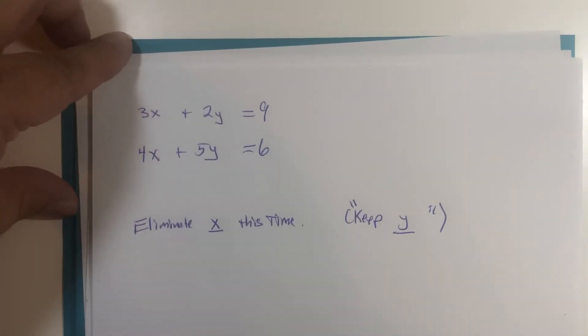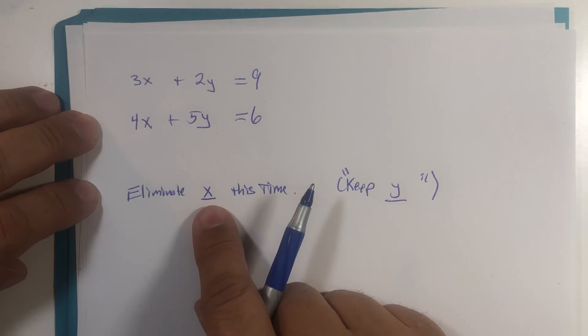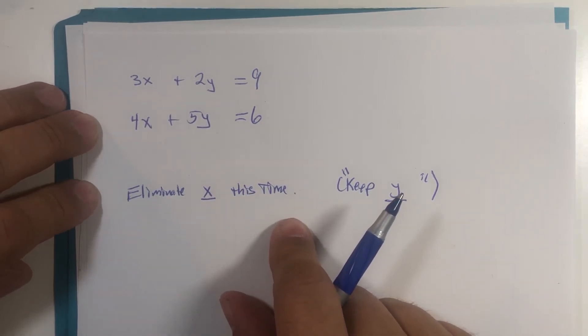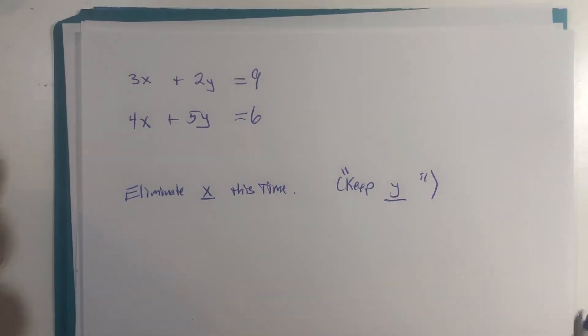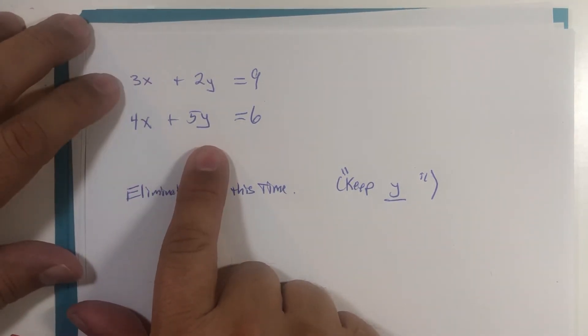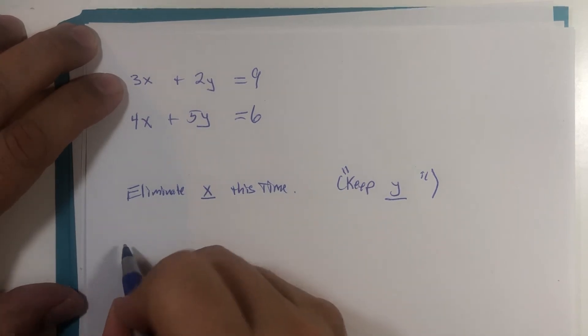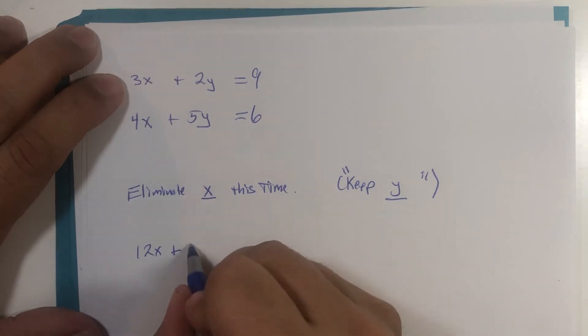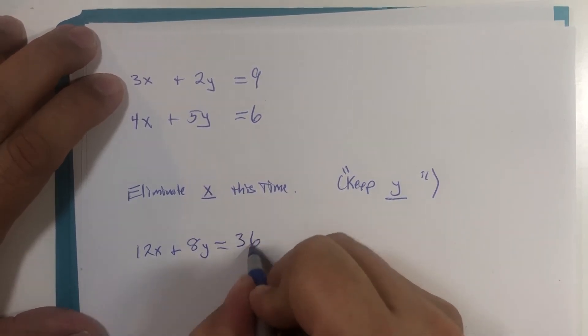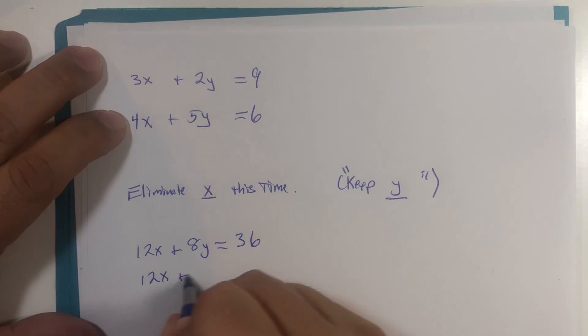Let's suppose we were going to eliminate the x and keep the y variable. So if we're going to get rid of x, we would multiply this top one by four and multiply this one by three. So if we multiply the top one by four, we would get 12x plus 8y equals 36. And multiply this one by three, that would be 12x plus 15y.